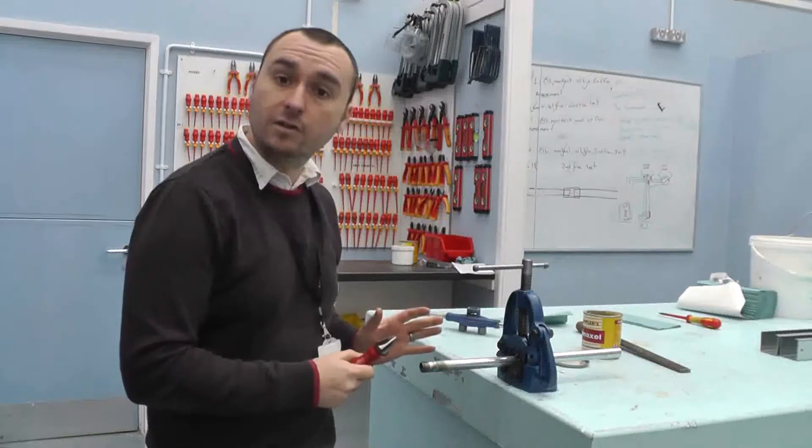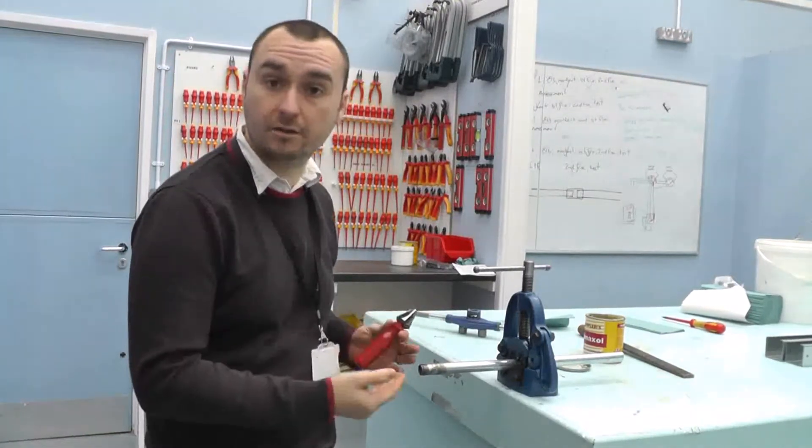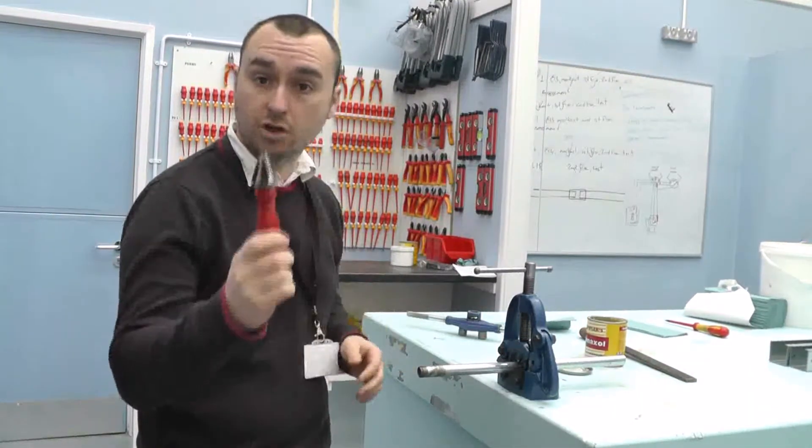Now, obviously during that threading process, it's removing parts of the steel conduit to create the thread. You're going to have burrs on the inside, which is what your reamer is for.